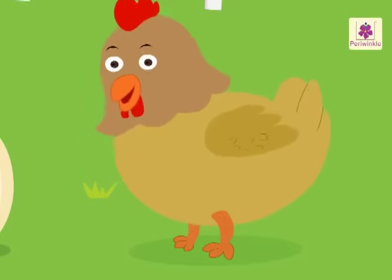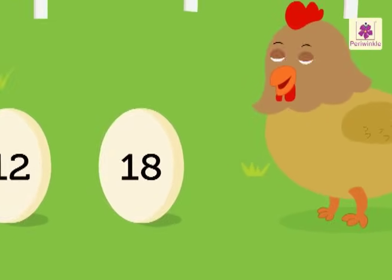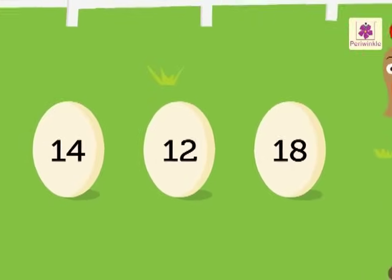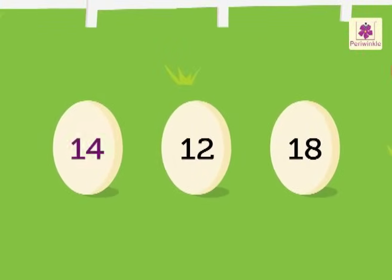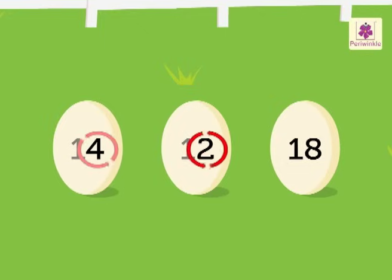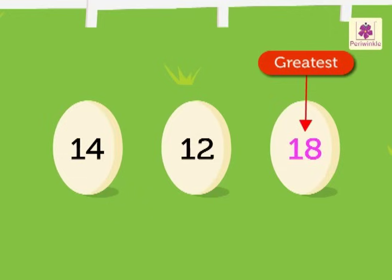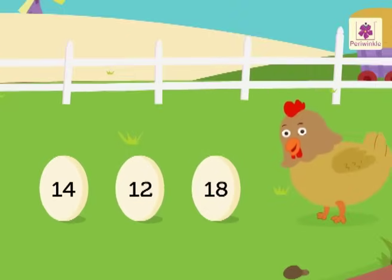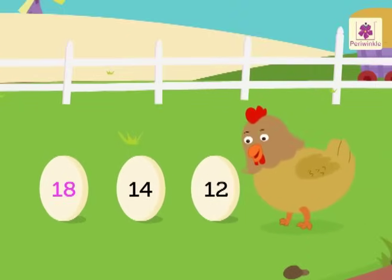Look at Daisy. She has got three new numbers to arrange in the descending order. They are 14, 12, 18. Here there are four ones in 14, two ones in 12, and eight ones in 18. The greatest is 18 and smallest is 12. Hence, the descending order is 18, 14, 12.